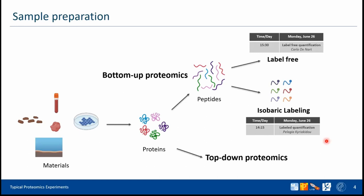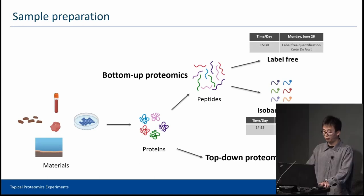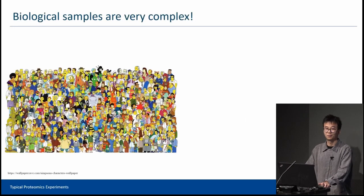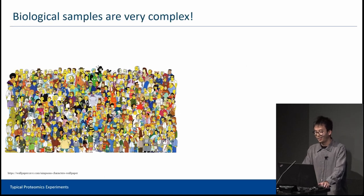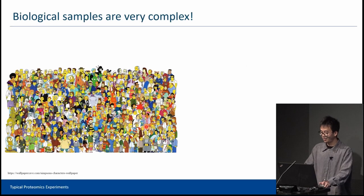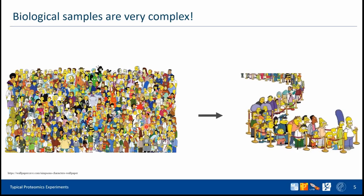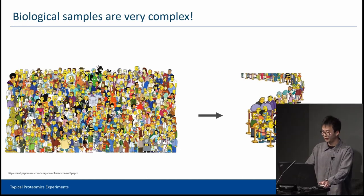Now we have mixed peptides from samples. I believe everyone agrees that biological samples are very complex. Like in this picture, at first glance you can barely identify any character. The information is just overwhelming. How about now? We separate them first, so it's much easier to identify each one. This is what we're going to do with mass spectrometry-based proteomics.